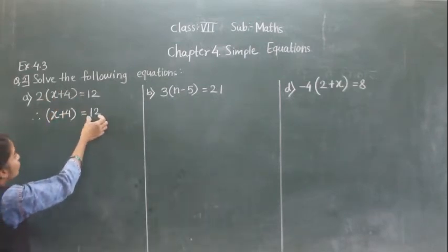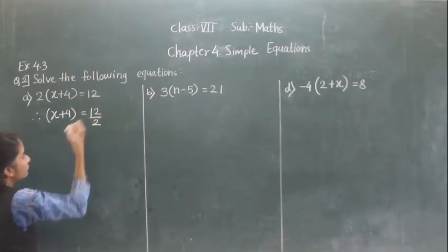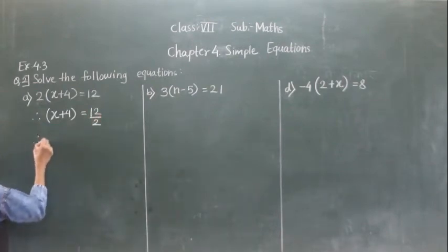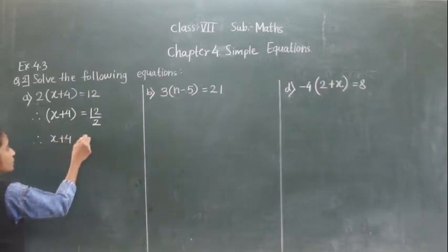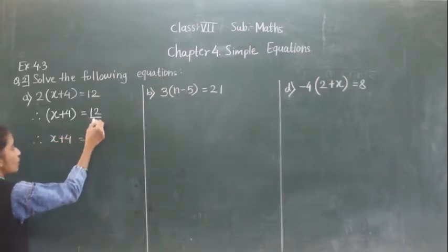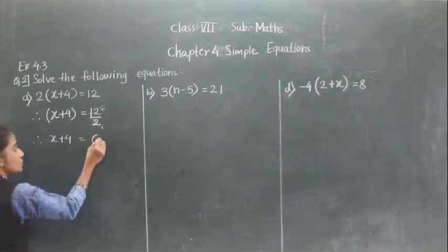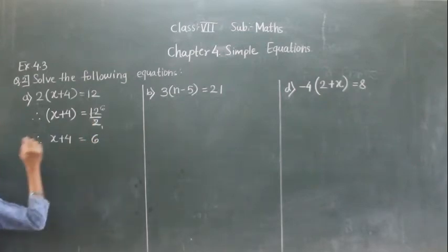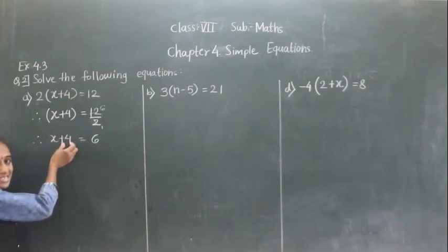If it comes to this side it will become divided. Then x plus 4 is equal to 12 divided by 2. Remember that 2 times 6 are 12. So x plus 4 is equal to 6.